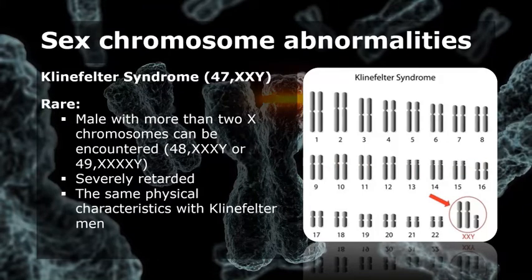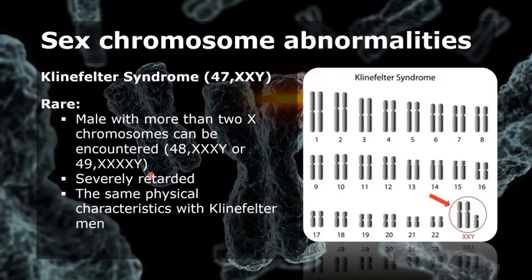There are rare cases where a male with more than two X chromosomes can be encountered, for example 48 XXXY or 49 XXXXY. These individuals are severely retarded and share physical characteristics with Klinefelter men, but often to a more marked degree.